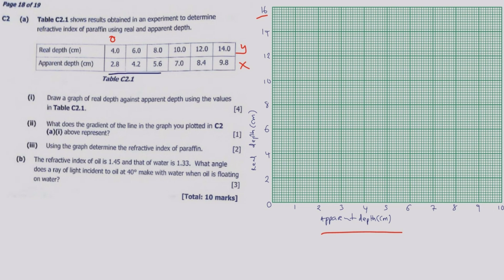We need to transfer these data points all the way to the graph. Once we do that we get the 4 marks, which is the easiest way to get them. So let us start with the point (2.8, 4): the real depth is 4, so we move along 4 on the y-axis, then 2.8 on the x-axis — remember each small unit is 0.1, so 2.8 is just two points before 3, somewhere at this point.